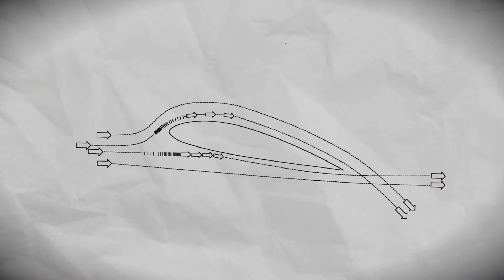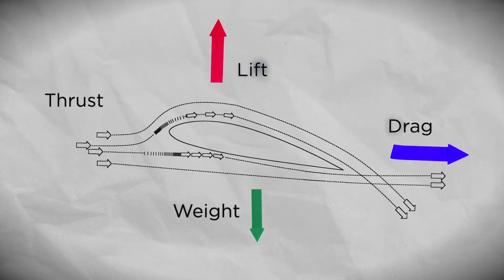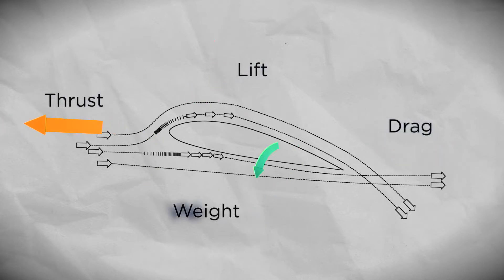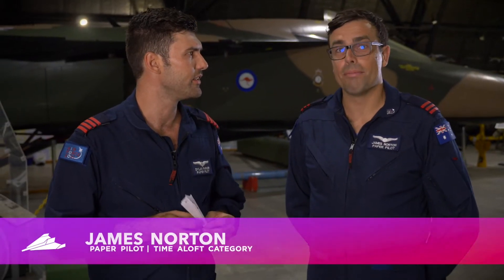The main four forces are lift, drag, thrust, and weight. Thrust is one we should talk about first because it's the energy we put from our arm into our paper plane to get it flying. To maintain that momentum we need to make our planes nice and sleek and aerodynamic so they cut through the air and reduce drag.